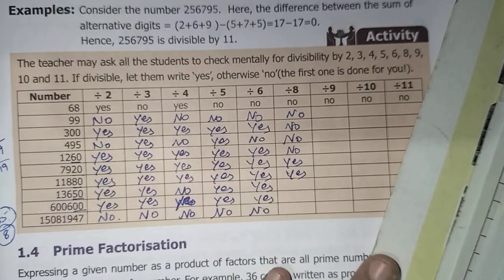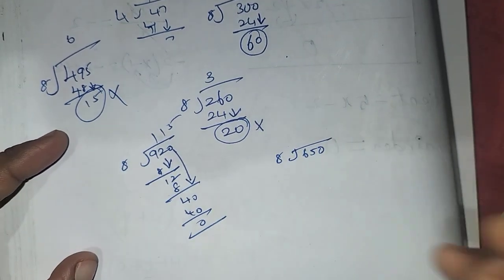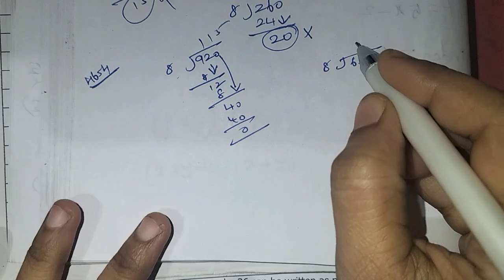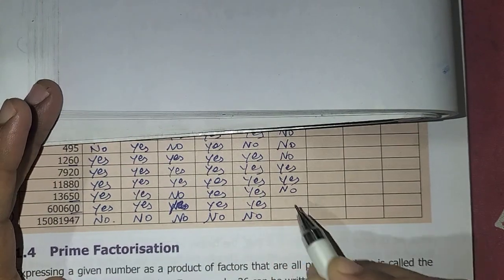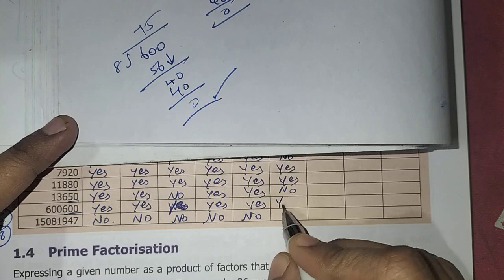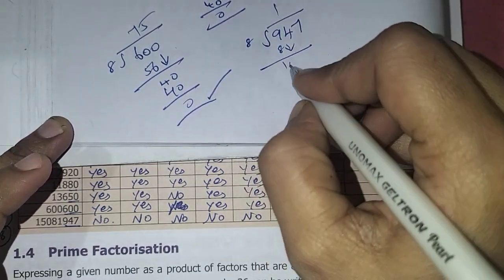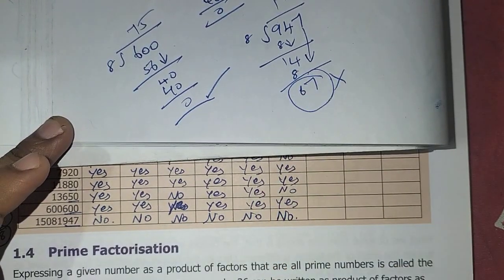Continuing with 8 divisibility: for 600, last three digits are 600. 8 times 7 is 56, balance 4; 8 times 5 is 40, remainder 0 — so yes. For 947: 8 times 1 is 8, balance 1 giving 14; 8 times 1 is 8, balance 6 — 947 is not divisible by 8, so no.